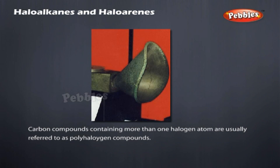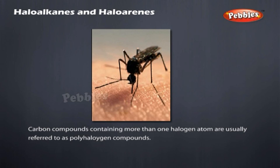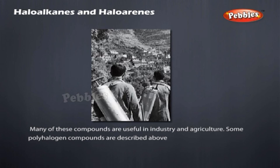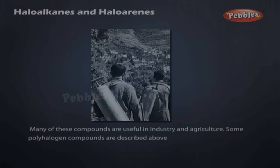Polyhalogen compounds: carbon compounds containing more than one halogen atom are usually referred to as polyhalogen compounds. Many of these compounds are useful in industry and agriculture. Some examples of polyhalogen compounds are described above.